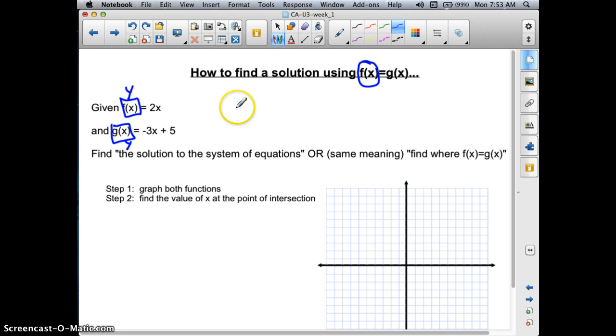We're going to learn how to find a solution using this concept where one function is equal to another one. So let's say we're given these two functions, and we want to find the solution to the system of equations. We have y equals 2x and y equals negative 3x plus 5.